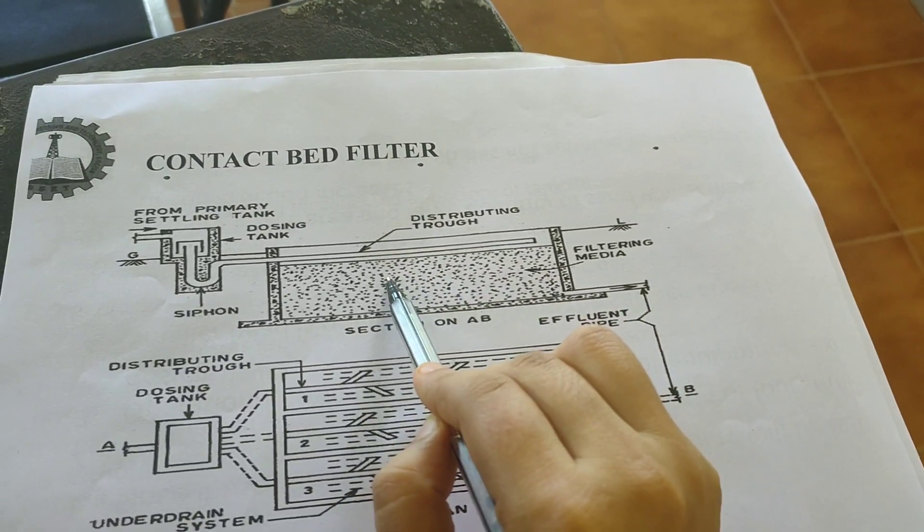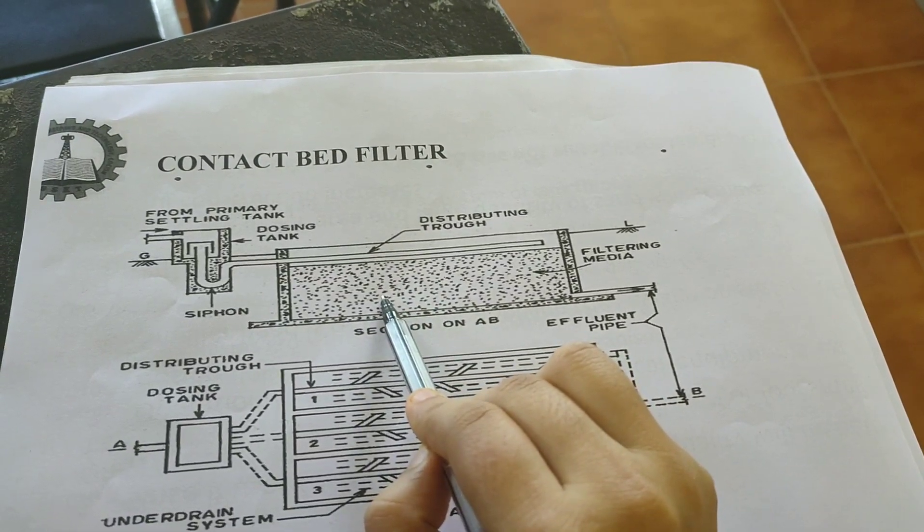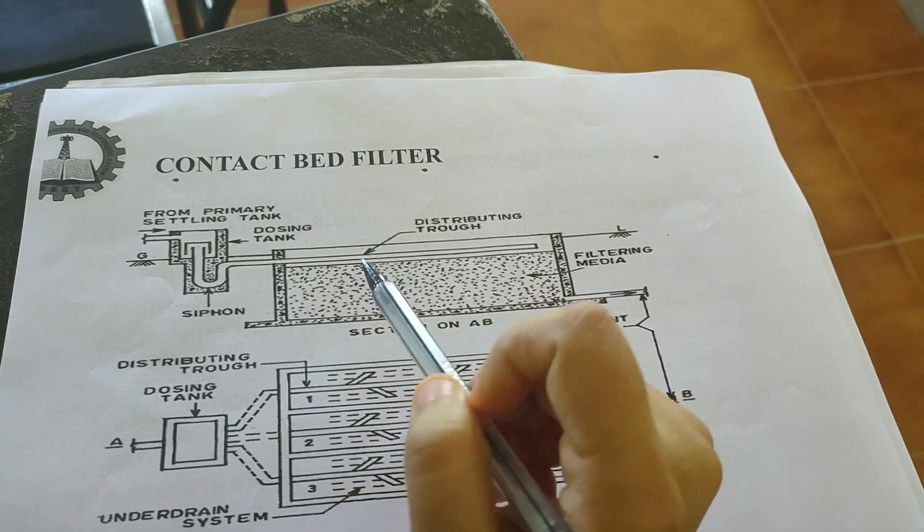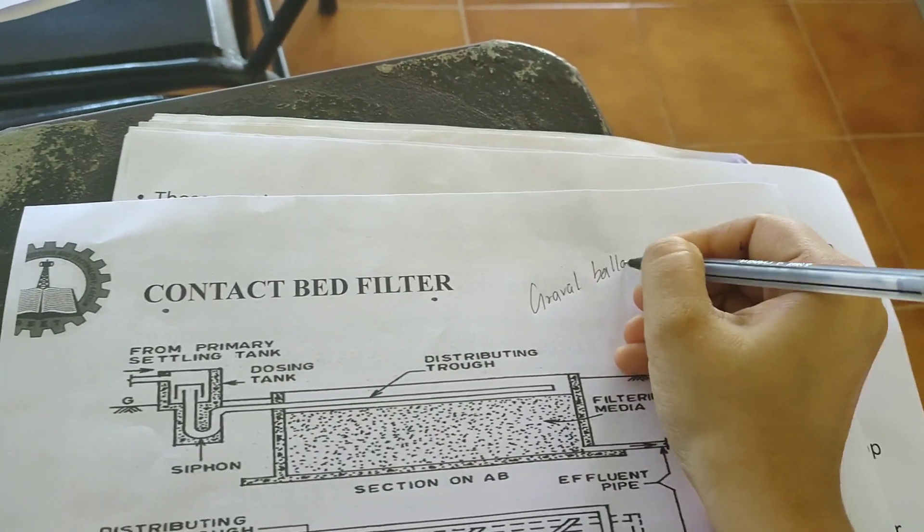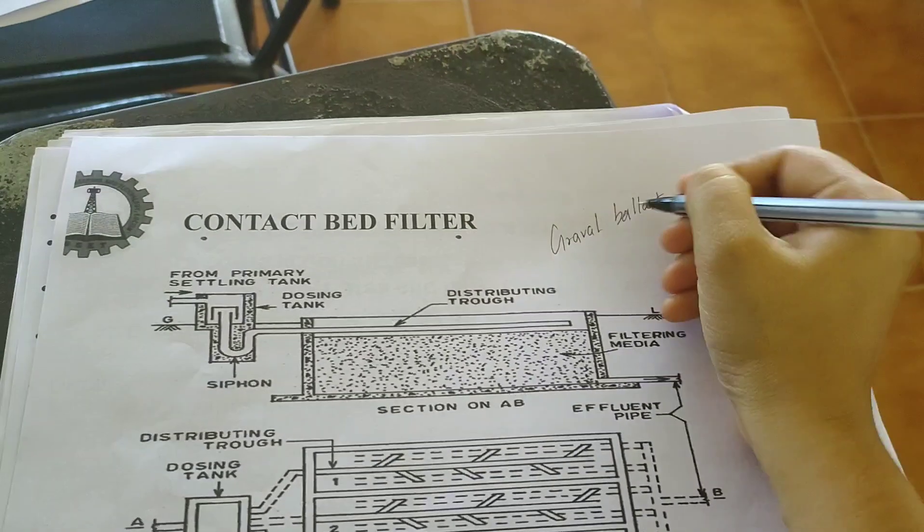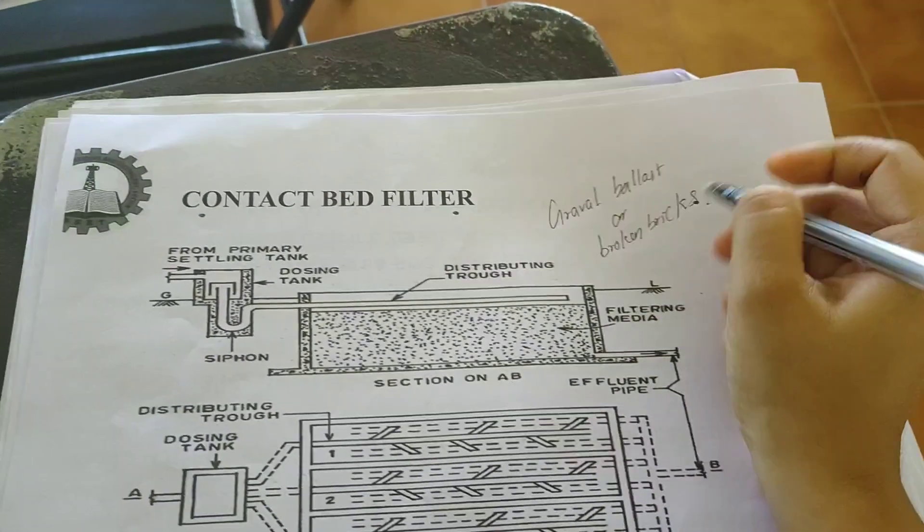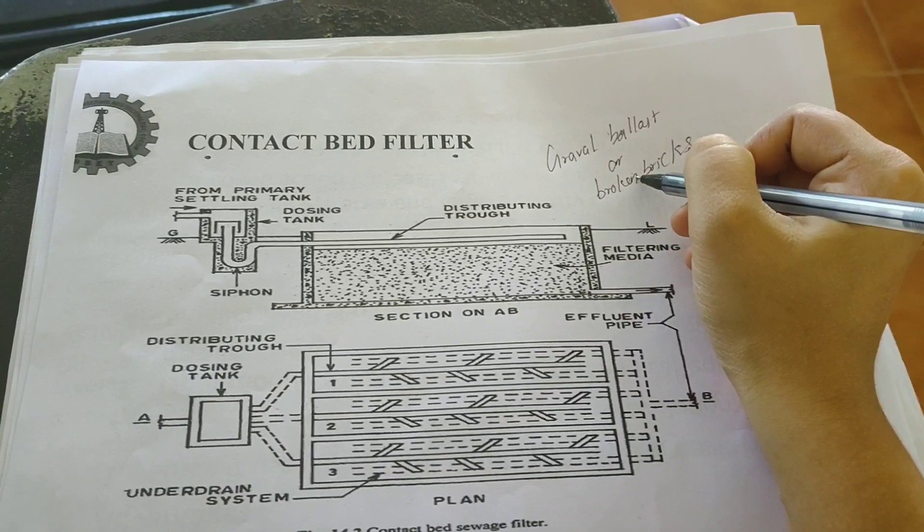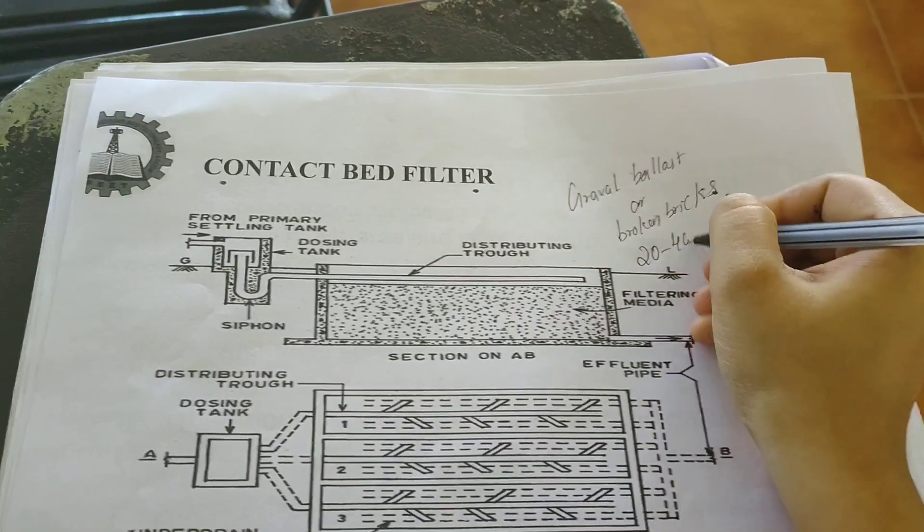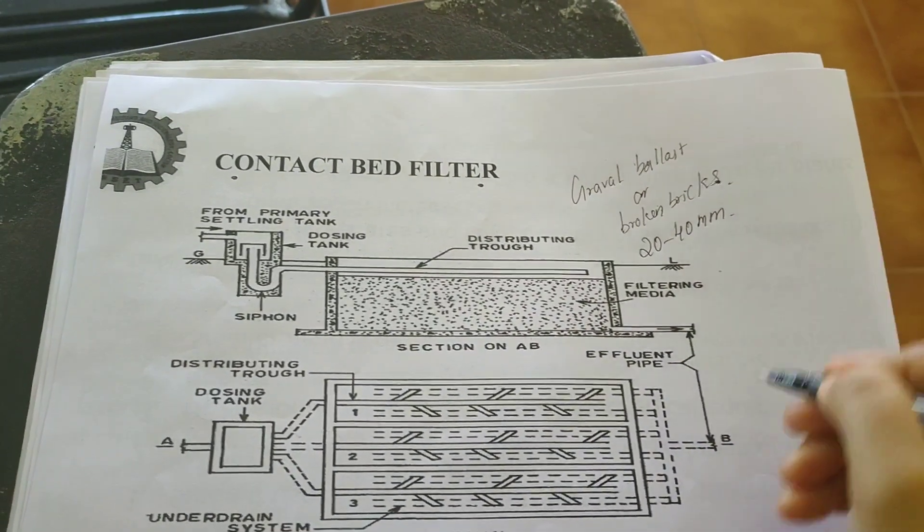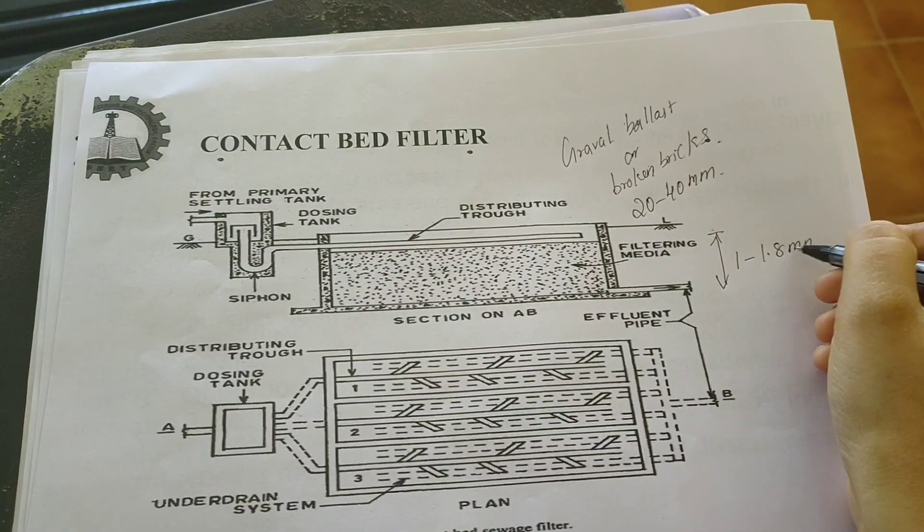Before moving on to its operation, let's have a look at its construction details. The filter material that we use in contact bed filters are gravel, ballast, or broken bricks. So higher size filter materials are used in this particular filter. The filter media size is about 20 to 40 mm, and the depth of filter will be about 1 to 1.8 meters.